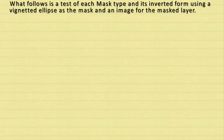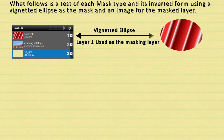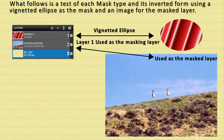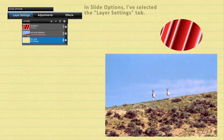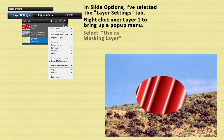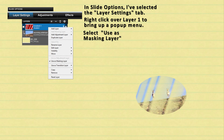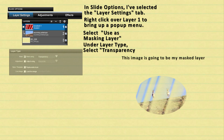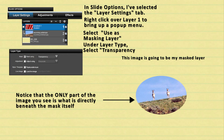Now I'm going to show you the effect of each type of mask and its inverted version upon a masked layer. I'm going to use layer one as an ellipse that I vignetted, and it's going to mask layer two. In slide options, select the layer settings. Right-click over the gradient layer and select 'Use as Masking Layer' from the pop-up menu. Next, go to Layer Type and select the transparency mask. You'll see that the only part of the image visible is what's directly beneath the mask.